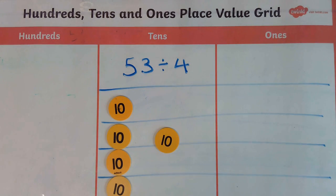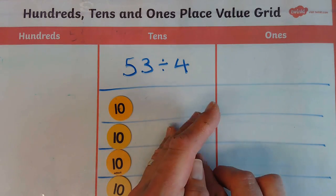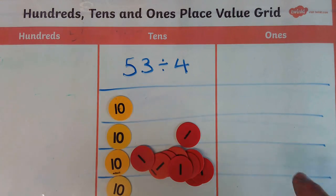And I can't fit this equally into them. So what I'm going to do is I'm going to exchange the 10 for 10 ones. So I'm going to get rid of that and I'm going to get 1, 2, 3, 4, 5, 6, 7, 8, 9, 10 ones. And I'm going to share these equally amongst the ones columns.